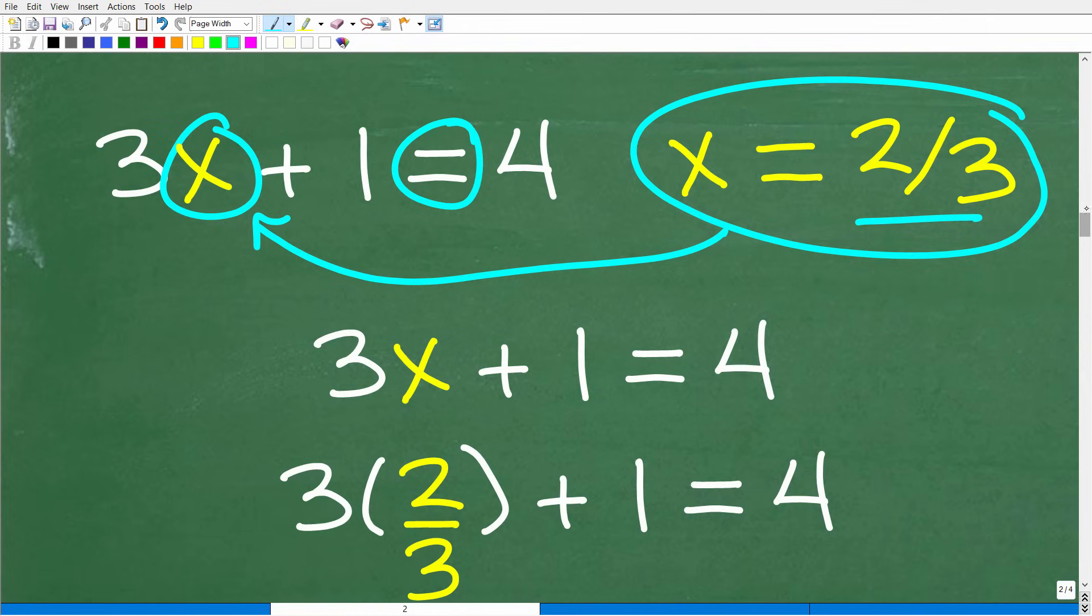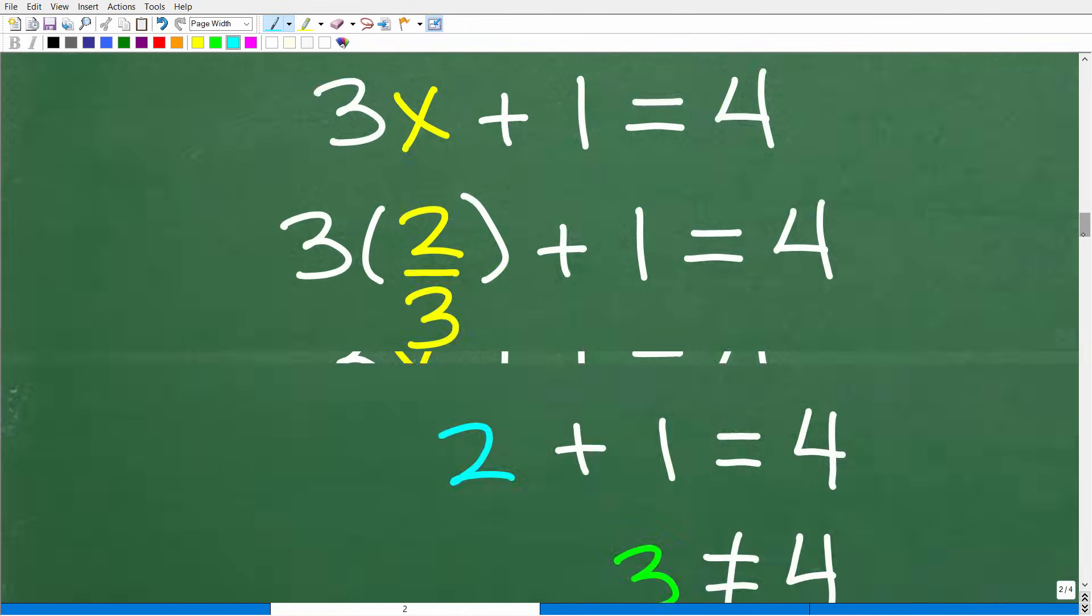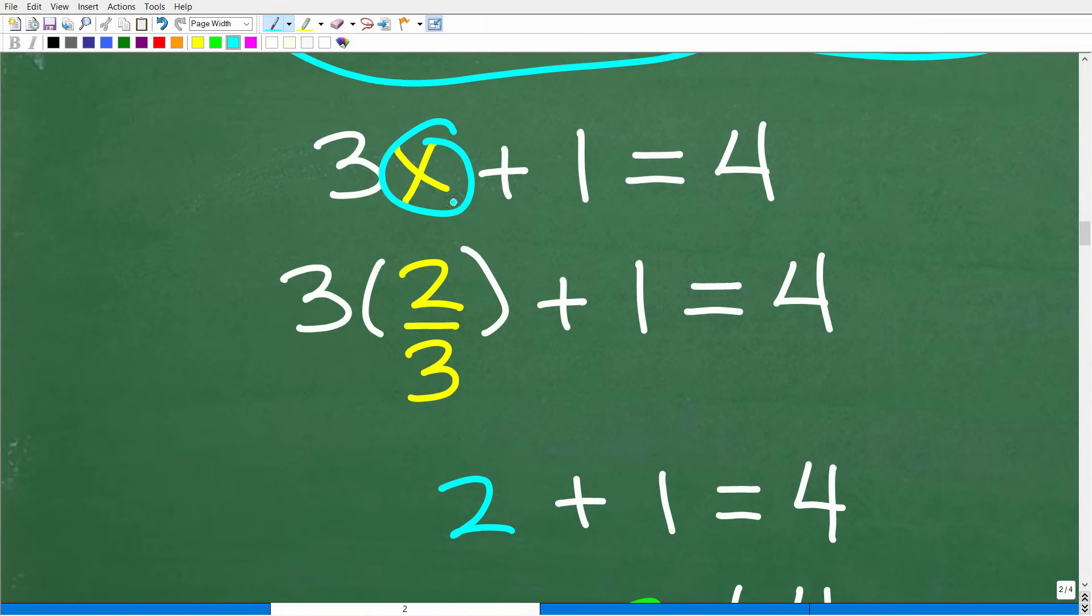OK, so let's go ahead and see what happens when we plug in or replace this x with this potential solution two thirds. OK, so that's going to be this three x here is three times x. So what we have here is three times two thirds plus one is equal to four.